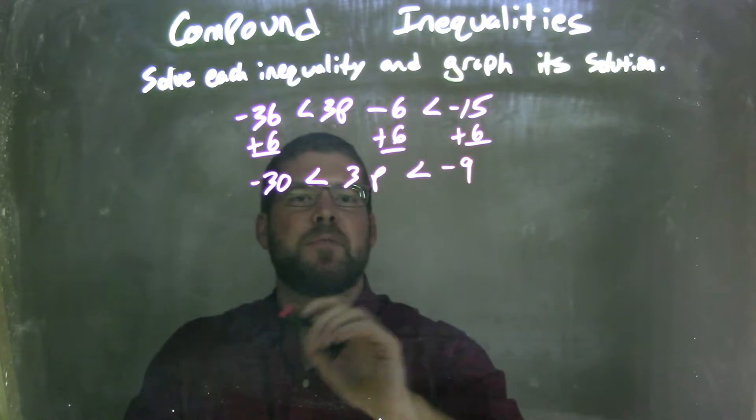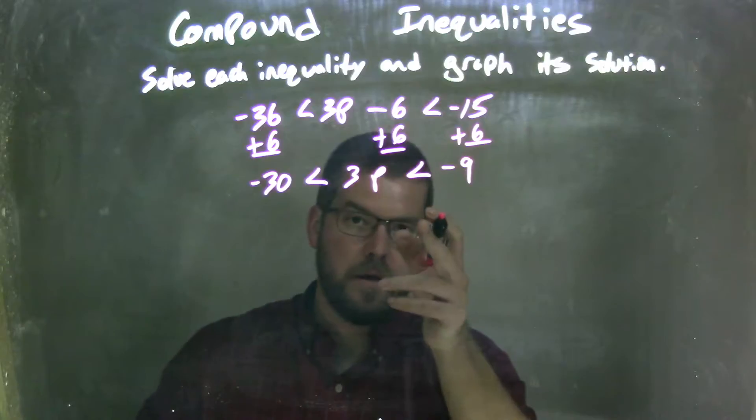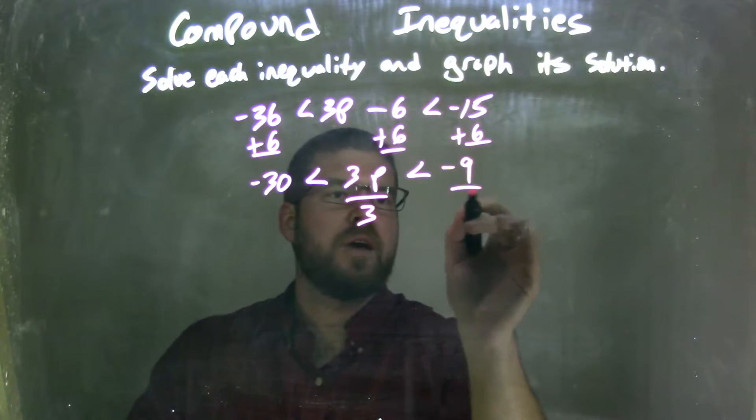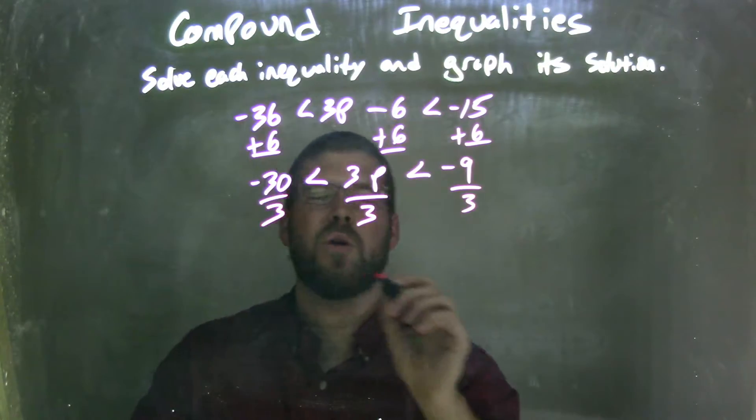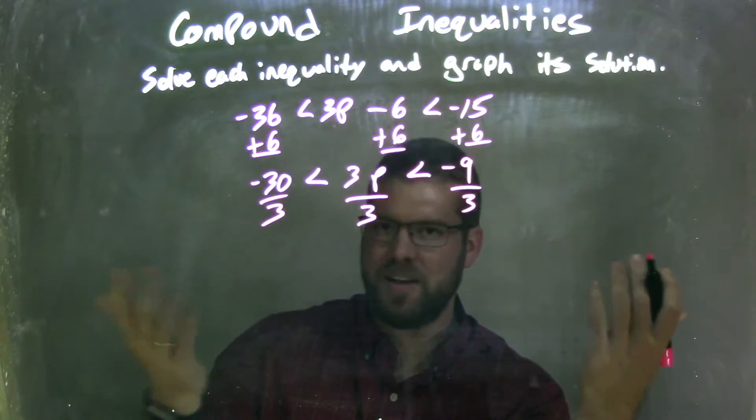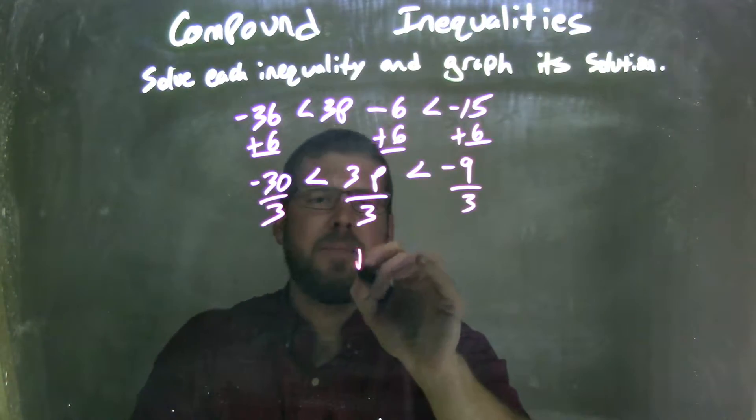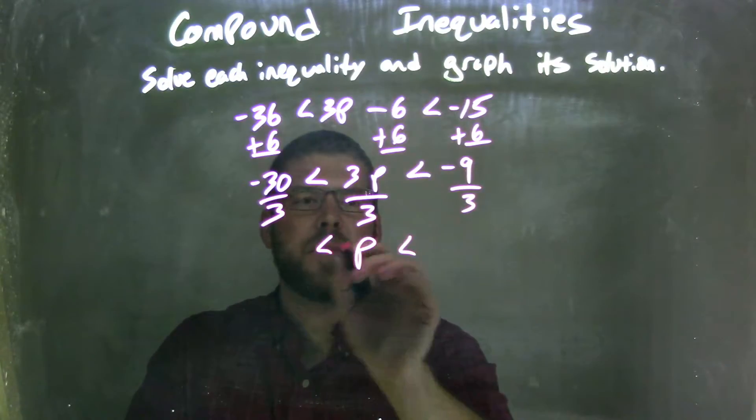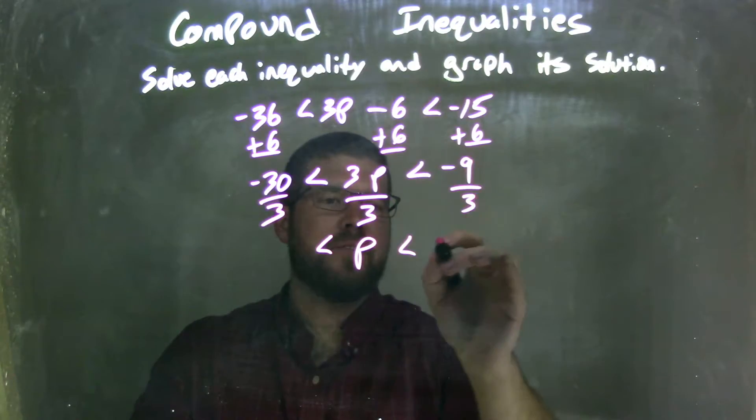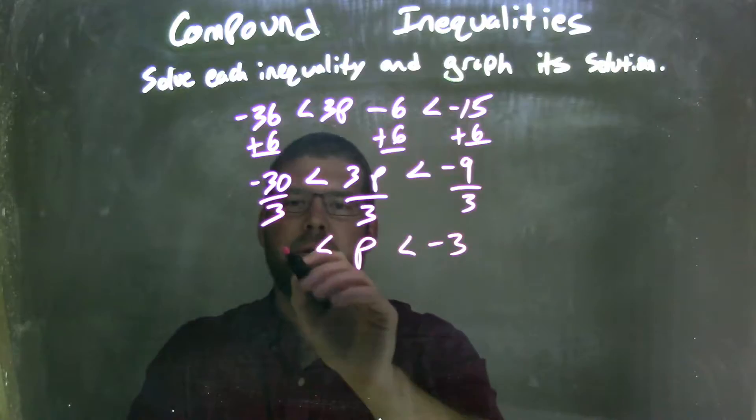So now I have 3 times p, optimal multiplication is division, so I'm going to divide by 3 to both sides, or all sides, not just both sides, all three sides. And in doing that, I have p by itself in the middle, negative 9 divided by 3 is negative 3, and negative 30 divided by 3 is negative 10.